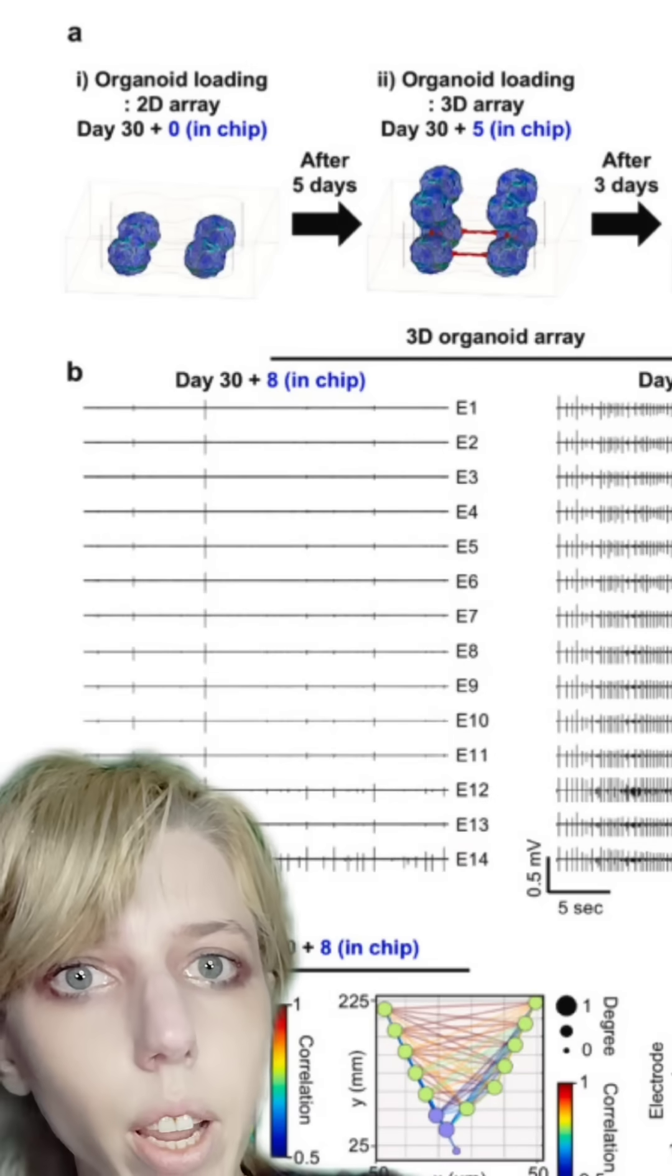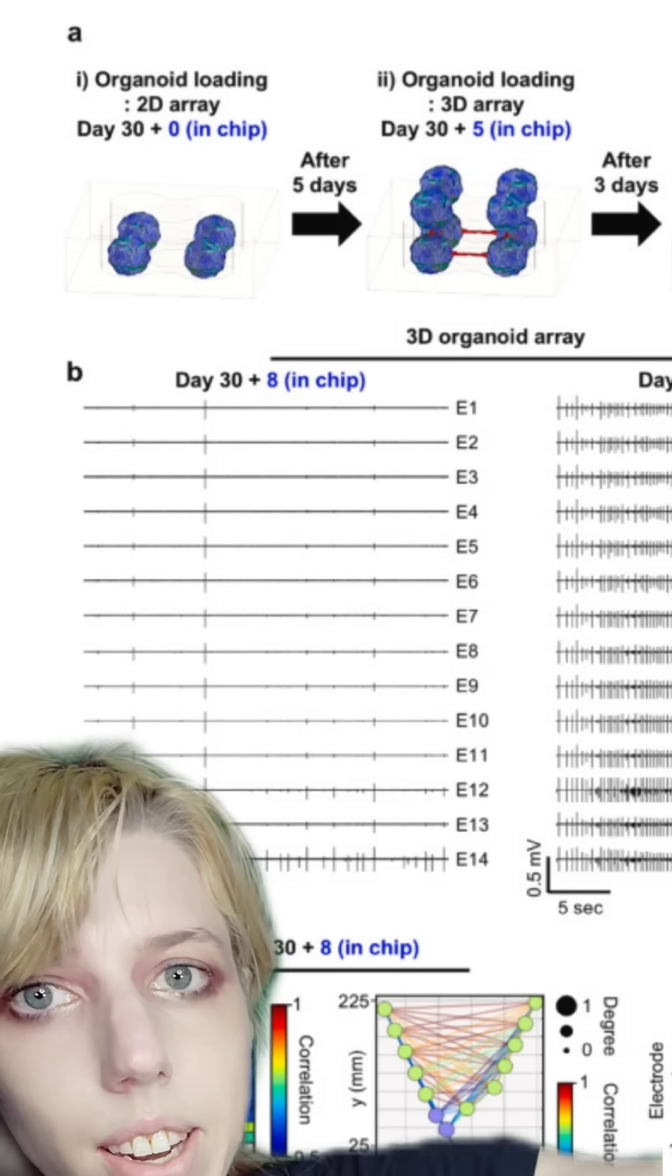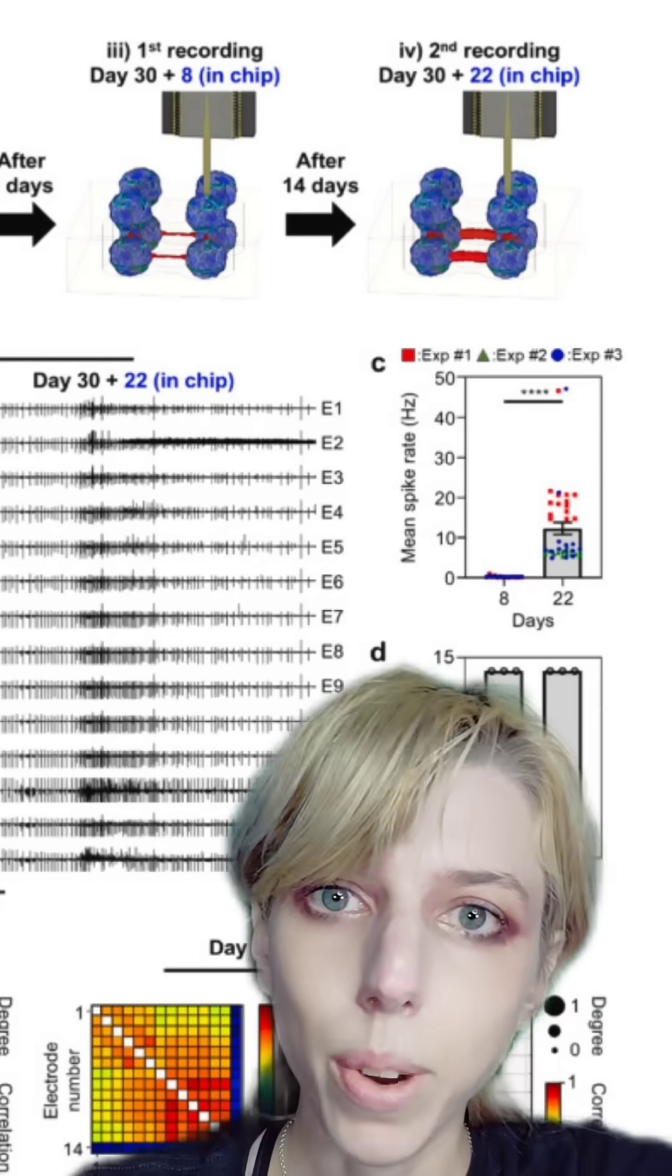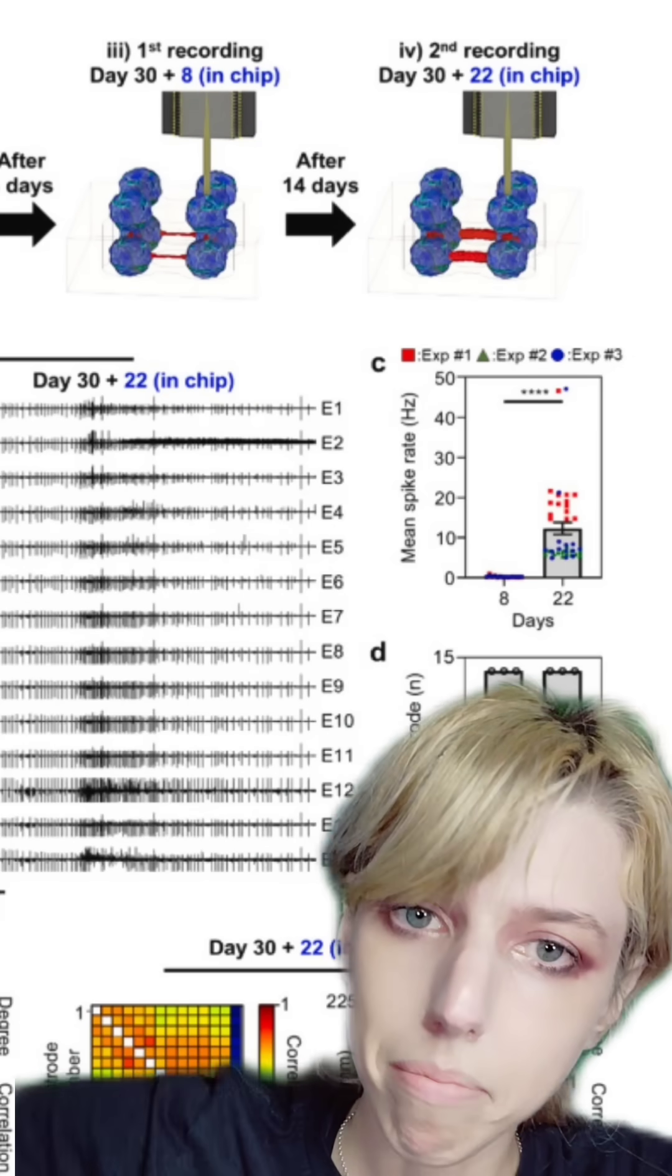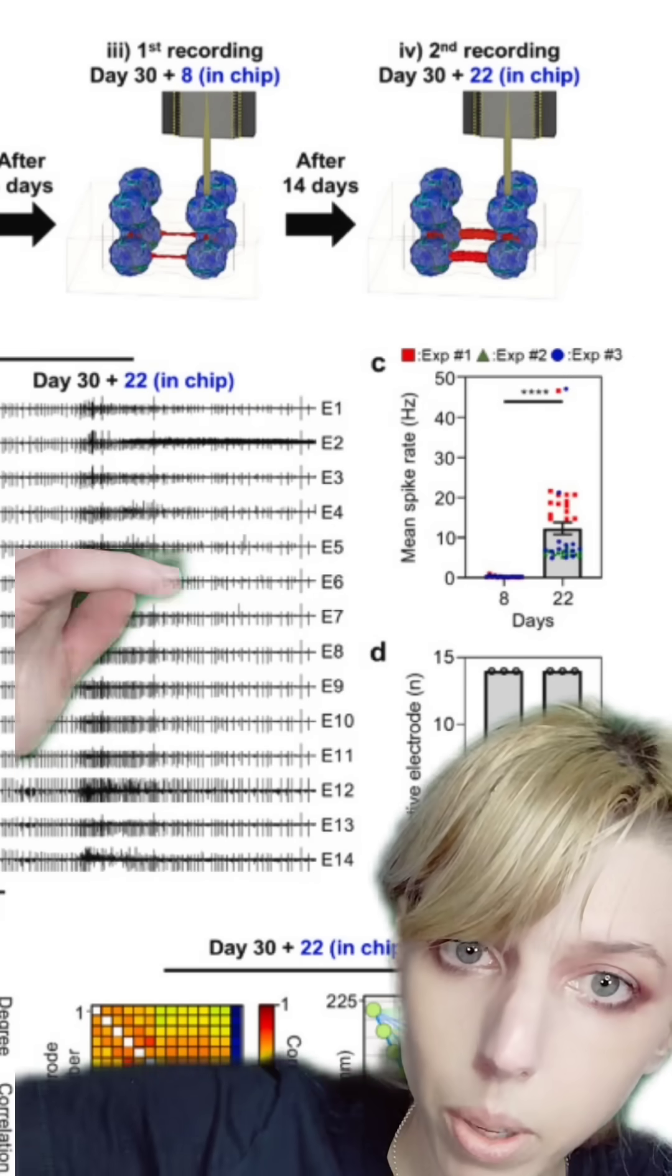It actually does work. And the more that are together, the more complex their brainwaves become. You can see day 30 here with just 30 in the chip. But with 22 all in tandem, you can see they have much more complex brainwaves. Each one of these is an individual.